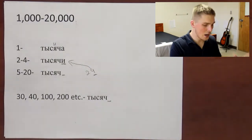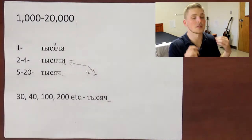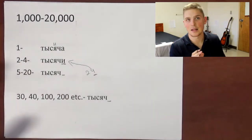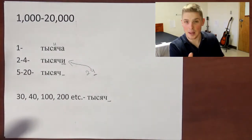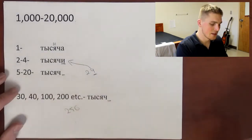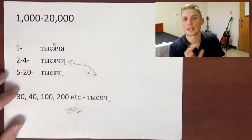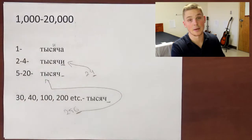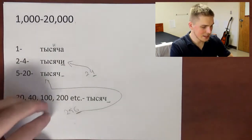Once again, we are going to choose the ending of the word itself based on the last digit in the number. Once again, if it's two hundred and fifty-six, then six is going to determine what ending we're going to use, which is going to be this one because it's from five to twenty. I hope that this is clear.